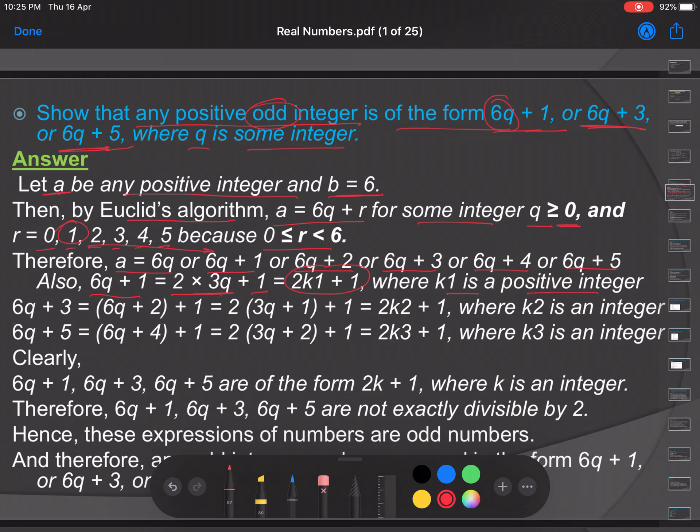Similarly 6q plus 5 can be written as 6q plus 4 plus 1. We can take 2 common for the first two terms and get 2k3 plus 1 where k3 is an integer.